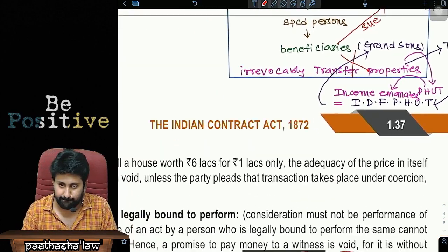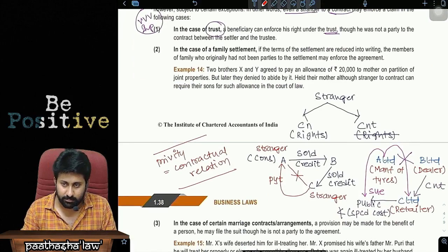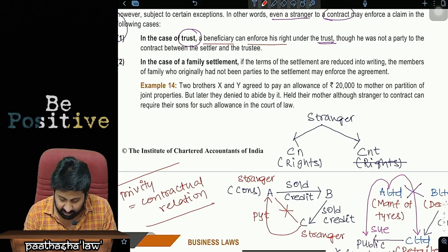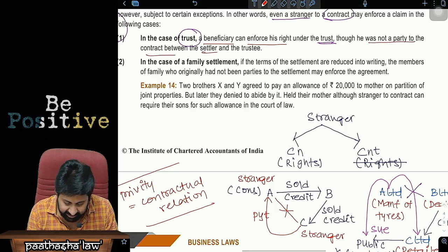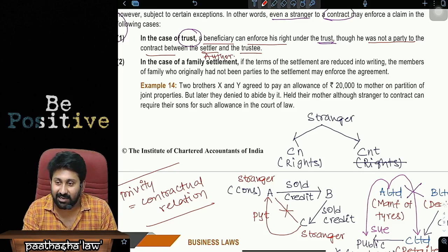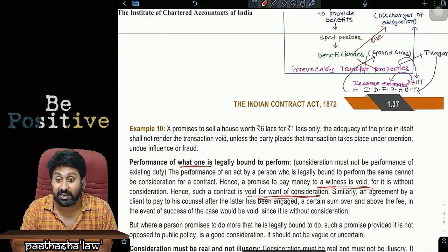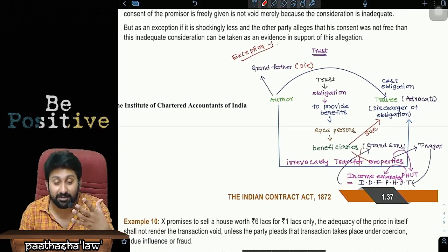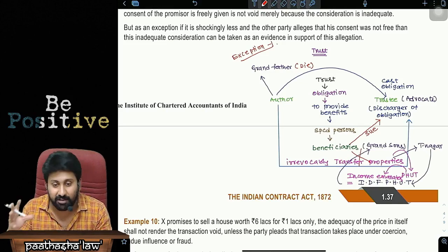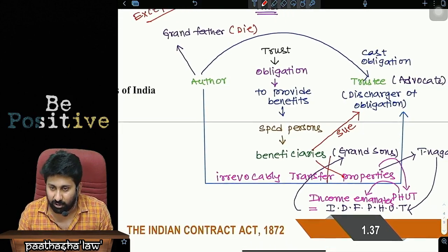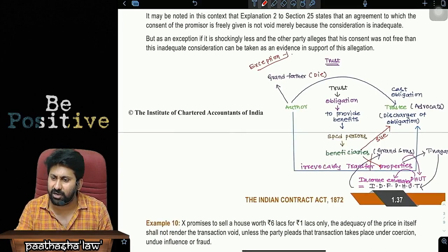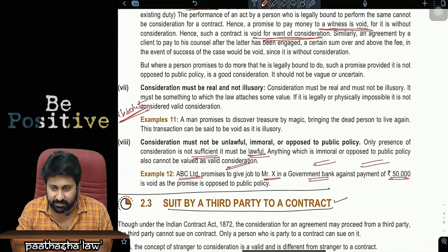Exception 1: In case of a trust, a beneficiary can enforce his right under the trust, though he is not a party to the contract between the settlor (also called author) and the trustee. If you read the institutional study material without this example, you won't understand the concept. That's Kaushik Mikesh's approach — understanding how the concept came about, not just reading the material. Once understood, any exam question can be answered.